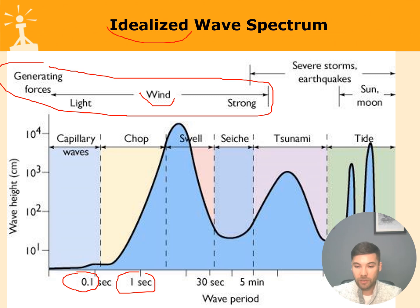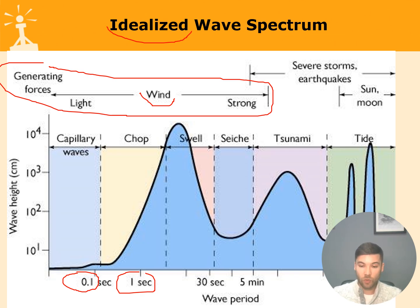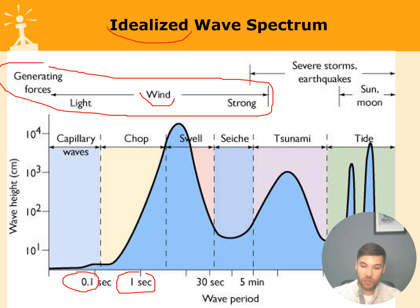Tsunamis can have a period of 10 minutes to one hour, depending on the source of energy. If the earthquake was very strong, you should expect bigger waves with different periods. The tsunami's behavior is also dependent on the bottom structure of the area where it's expected, so be careful with that.